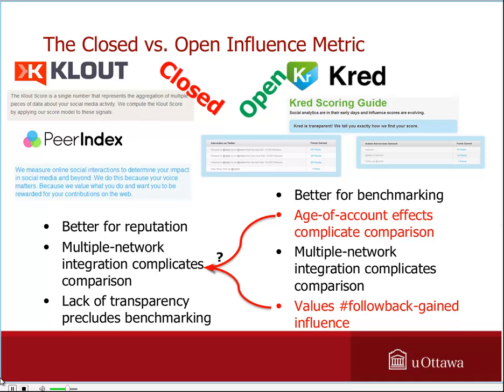At Science Online 2012, Lou Woodley and I laid out this distinction between the big names in influence measurement based principally on their relative transparency regarding their proprietary algorithms. Whereas Klout and Peer Index do not give any significant information about how their score is generated, Kred provides detailed tables assigning both outreach and influence point values for specific interactions on both Twitter and Facebook.